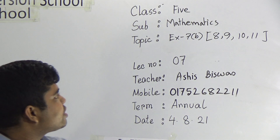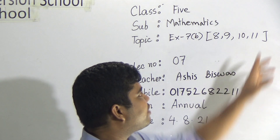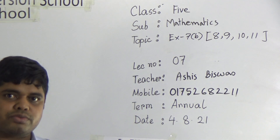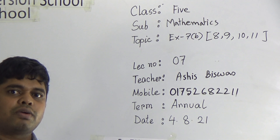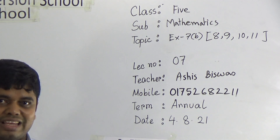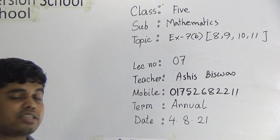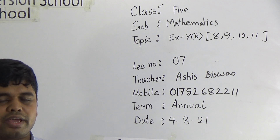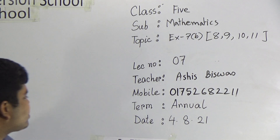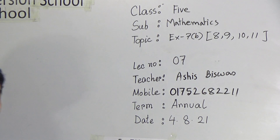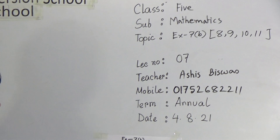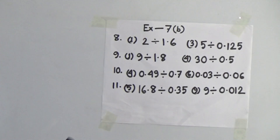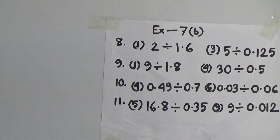From exercise 7b, we shall solve question numbers 8, 9, 10 and 11 as your classwork. Questions 8, 9, 10 and 11 have a lot of sub-problems. We shall solve only selective problems; other problems will be solved by yourself at home. Exercise 7b means decimal division.